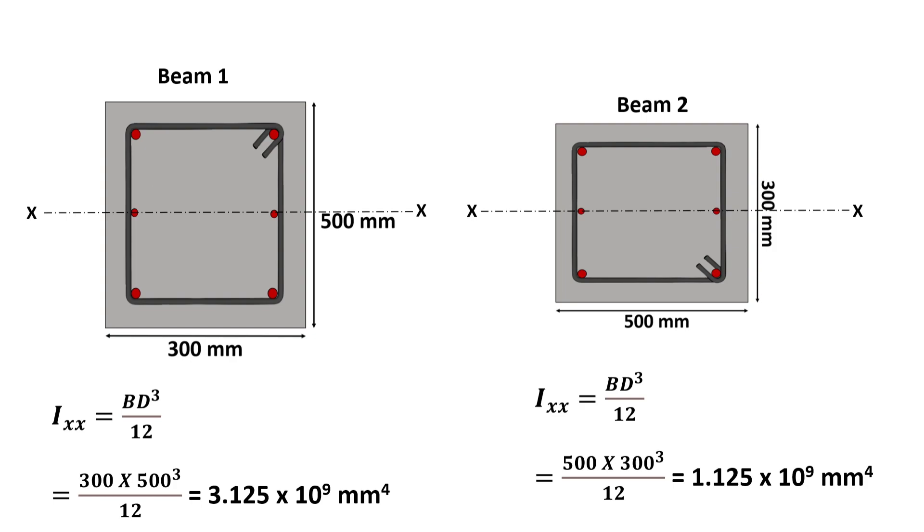For beam 1, I will be equal to BD³ upon 12, where B is 300 mm and D is 500 mm. On substituting these values, I will be equal to 3.125 into 10 to the power 9.